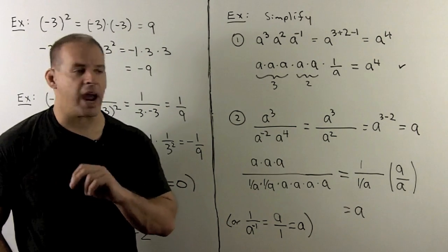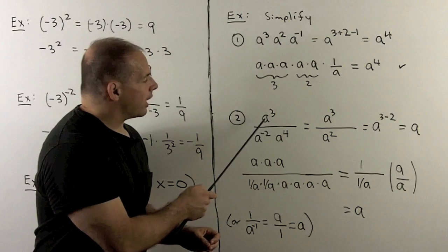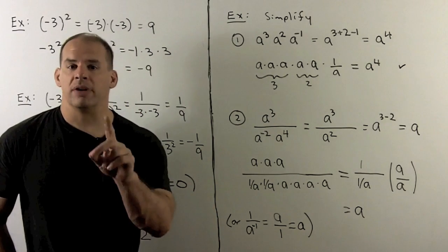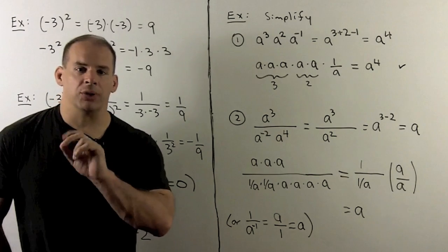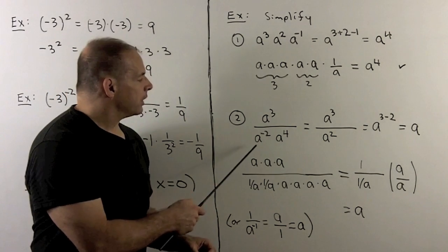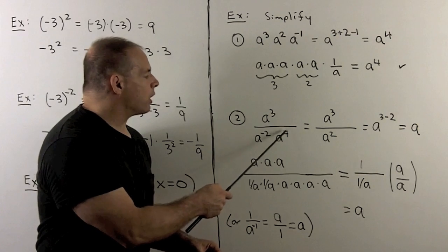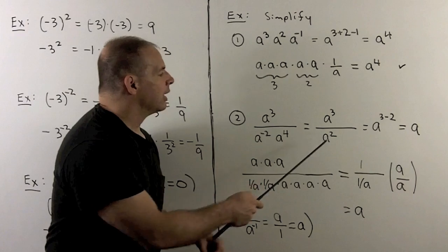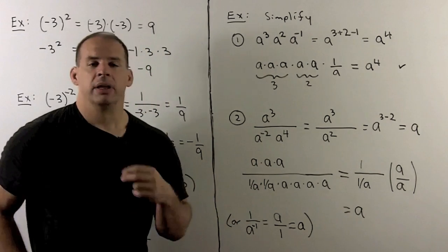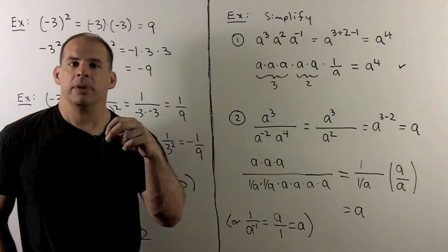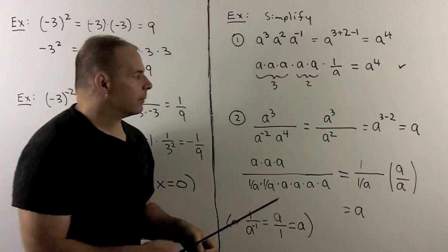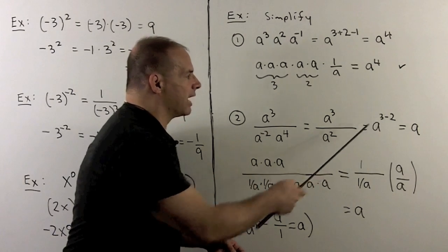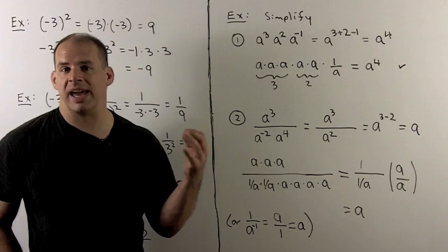Another example using a fraction. I have a cubed over a to the minus 2 times a to the 4th power. I'll simplify the denominator first. a to the minus 2 times a to the 4th — we add the exponents since we have a like base — gives us a squared. Then using the quotient rule, we subtract the exponent in the denominator, so we get a to the 3 minus 2, which is a to the 1, which is just a itself.